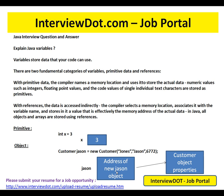For example, Customer json = new Customer(). This creates the actual object, and json is just a variable — this variable holds the address of the actual object. The actual object will be created somewhere in the heap memory, and that address will be stored in json.